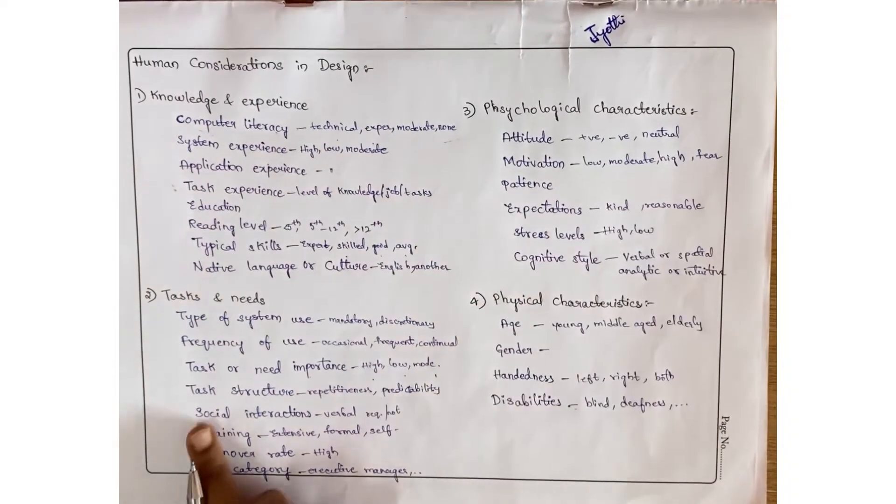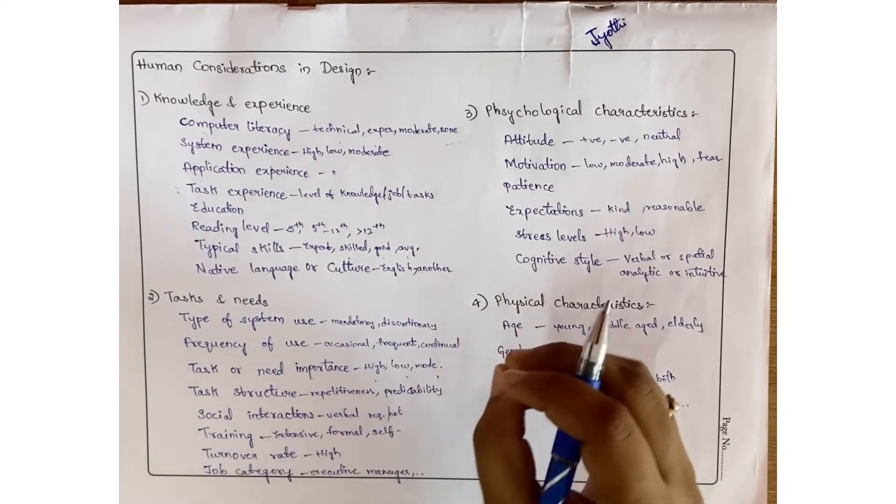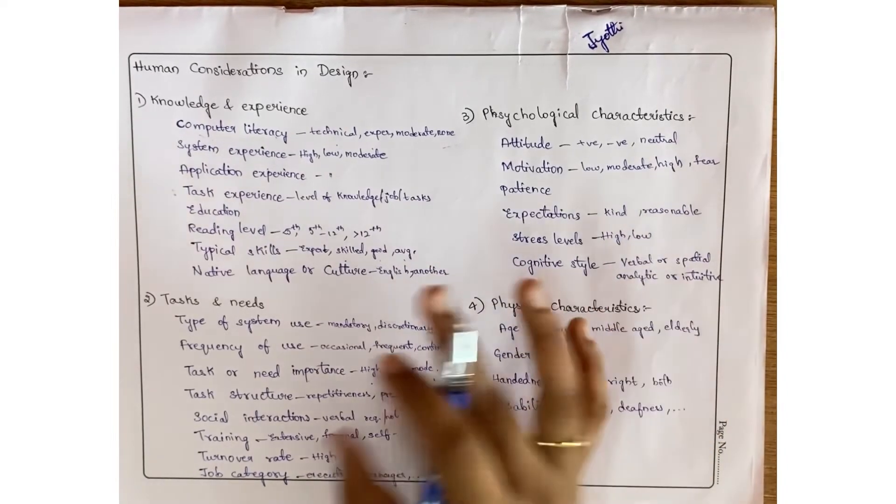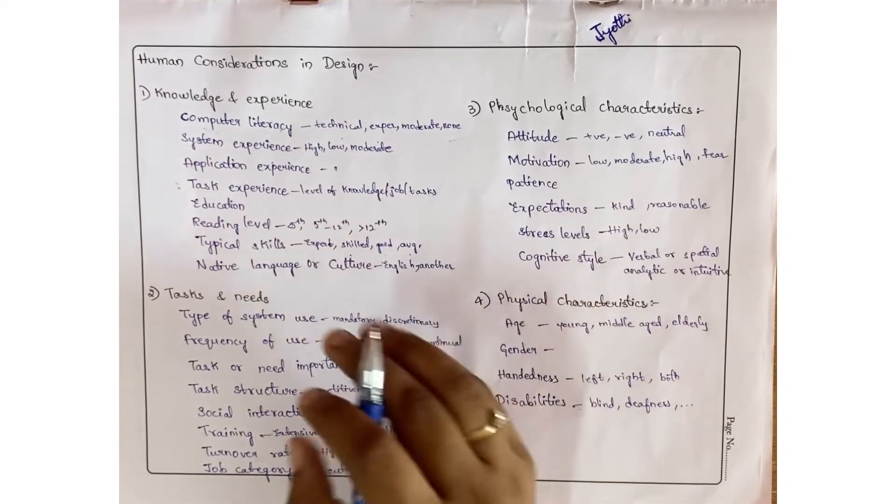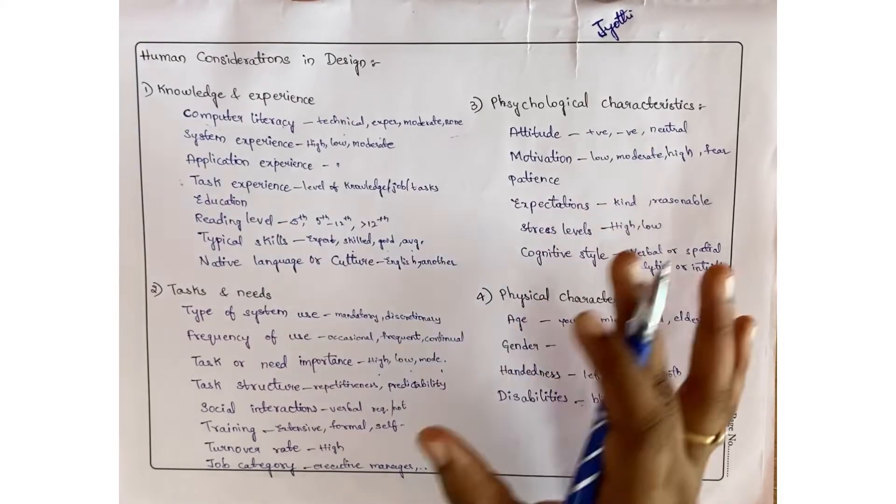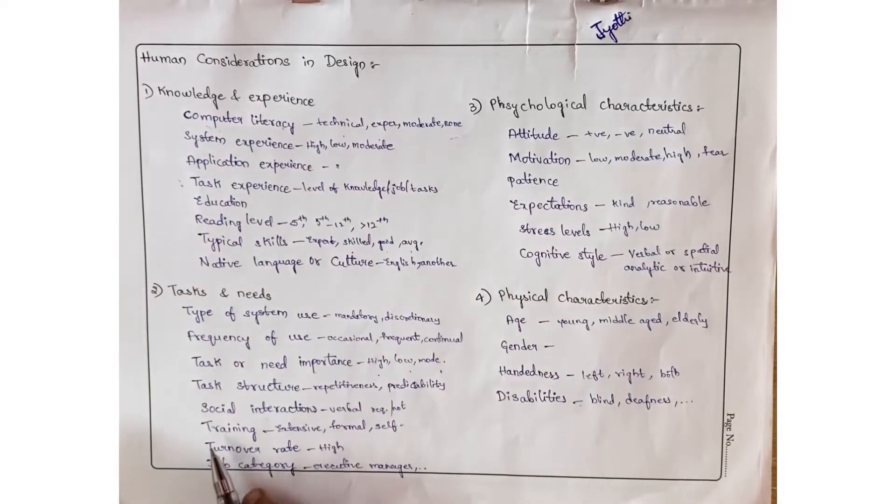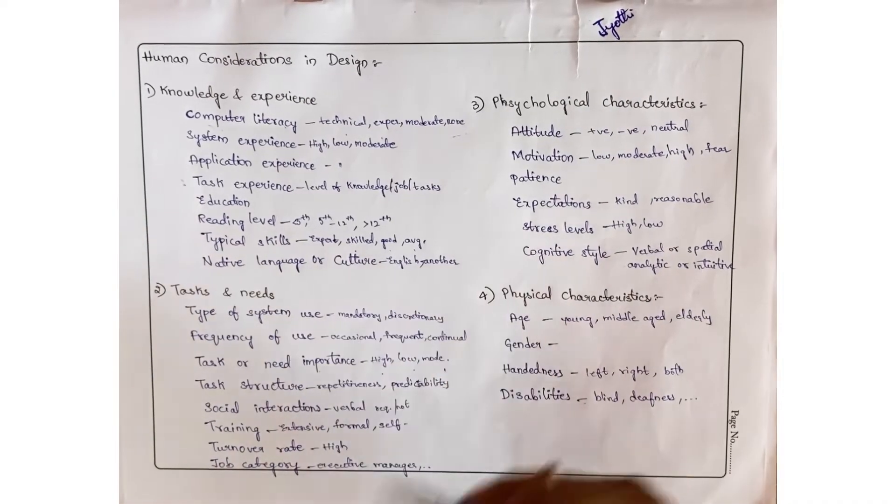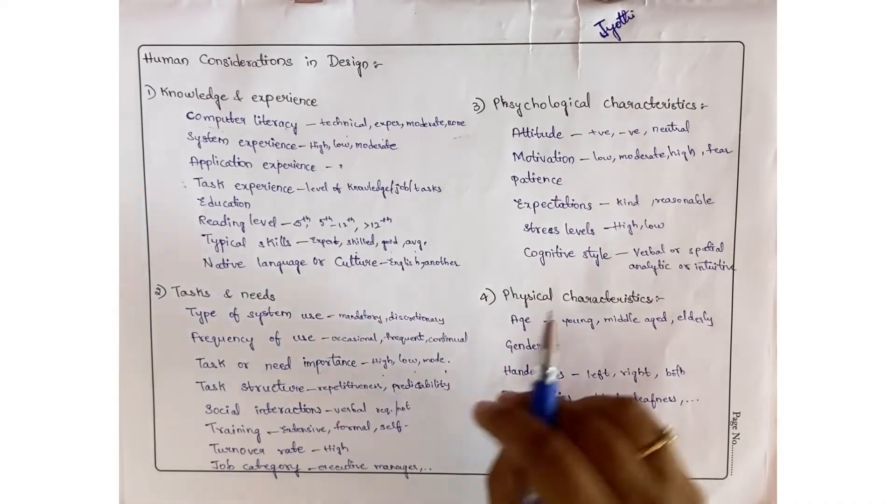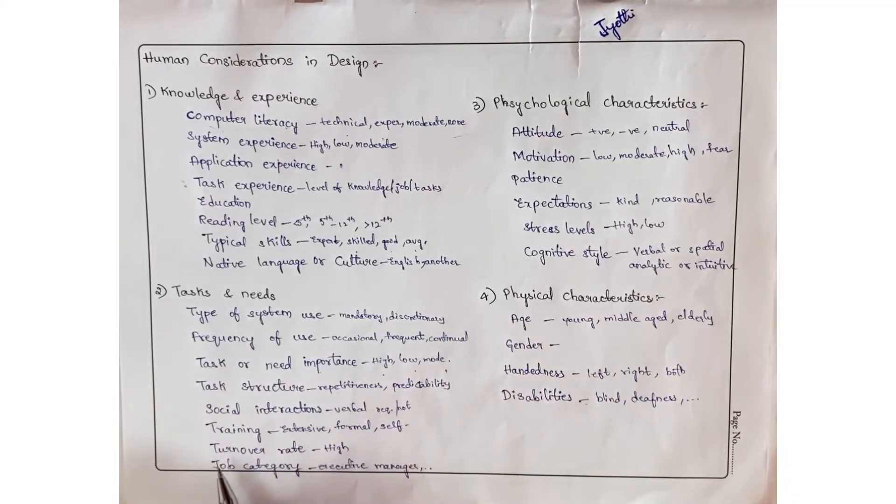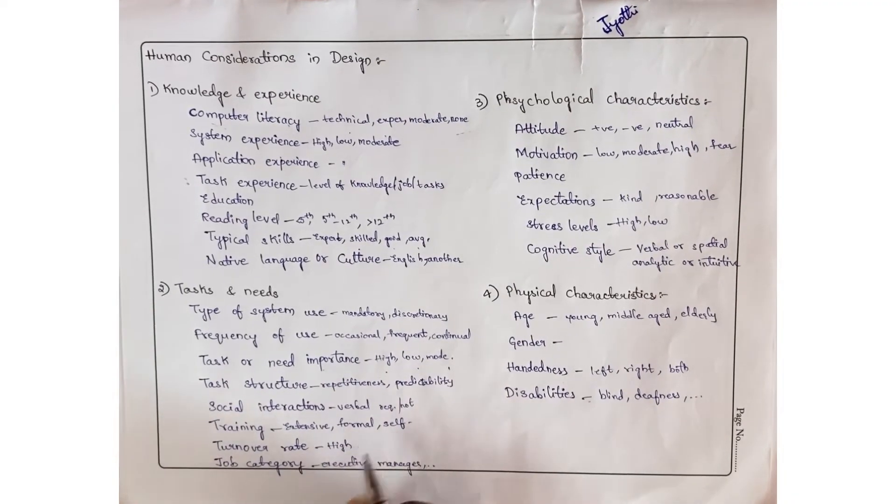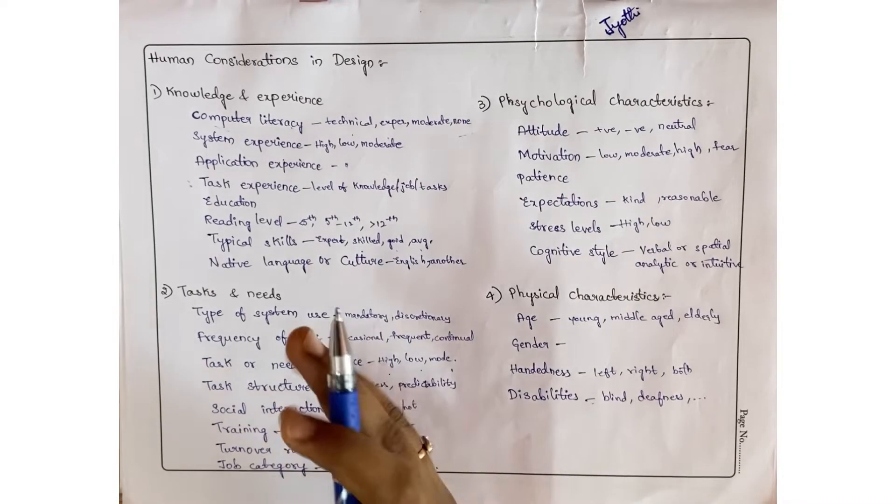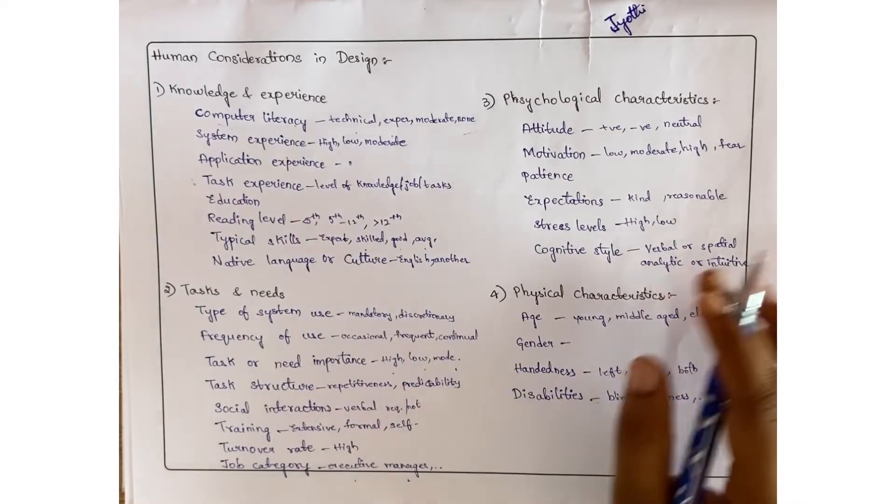Social interactions - whether verbal communication is required or not required. With friends we go with normal communication, with higher officials we go with formal communication. Coming to training - whether you have to get extensive training, formal training, or self-train. Turnover rate may be high, low, moderate. Job category - executive, manager, we find many positions.